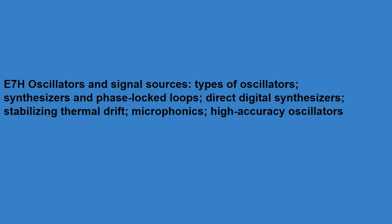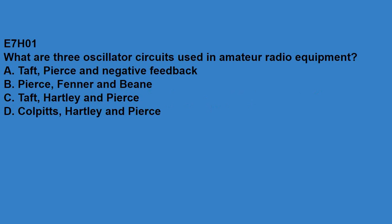E7H covers oscillators and signal sources, types of oscillators, synthesizers, phase lock loops, direct digital synthesizers, stabilizing thermal drift, microphonics, high accuracy oscillators. E7H01, what are the three oscillator types used in amateur radio equipment? Those are Colpitts, Hartley, and Pierce.